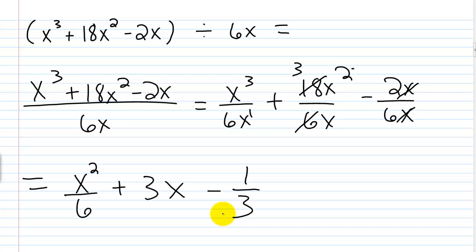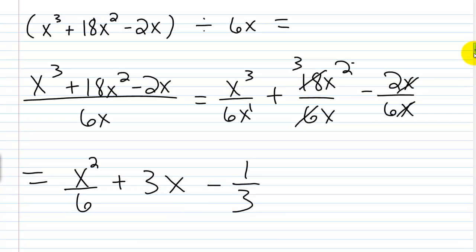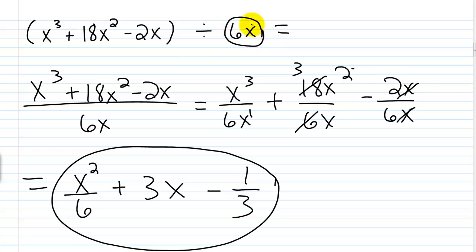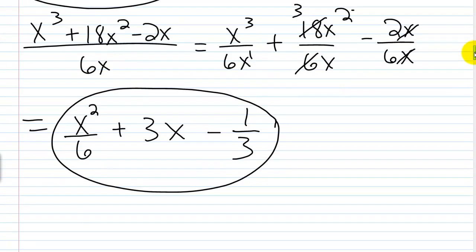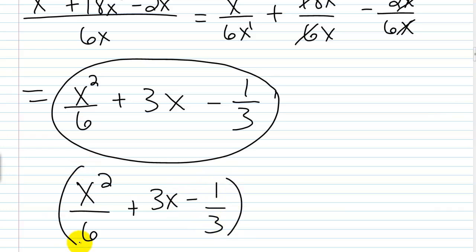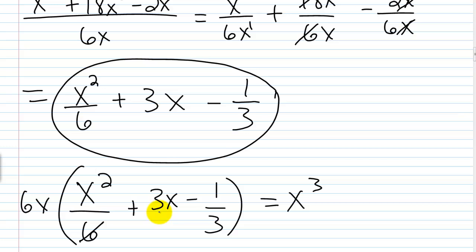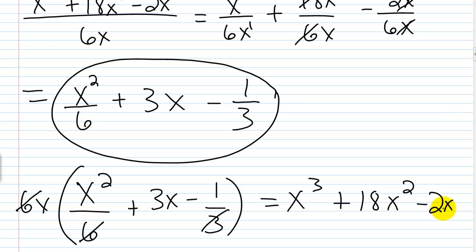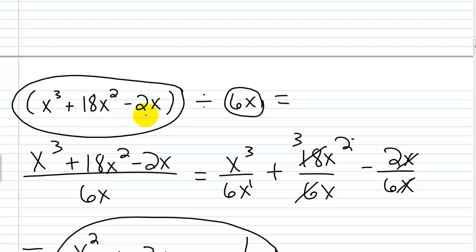So the answer is x²/6 + 3x - 1/3. Let's verify by multiplying the quotient by the divisor 6x: 6x · (x²/6) = x³ (the 6's cancel), 6x · 3x = 18x², and 6x · (-1/3) = -2x (the 6 and 3 cancel leaving 2). This gives x³ + 18x² - 2x, which is exactly what we started with.